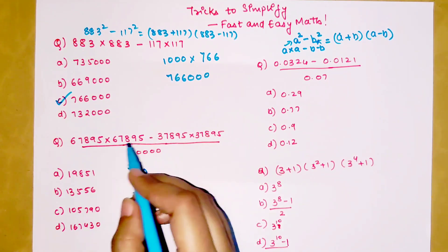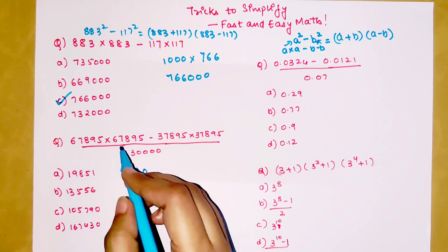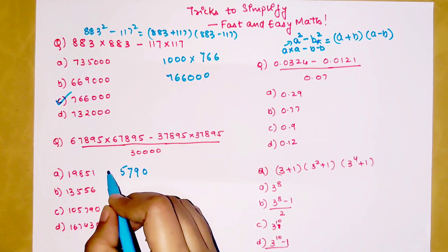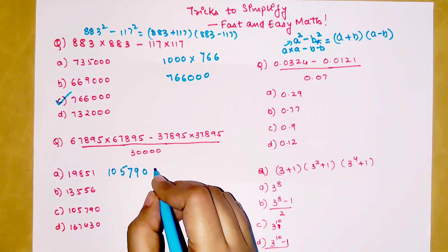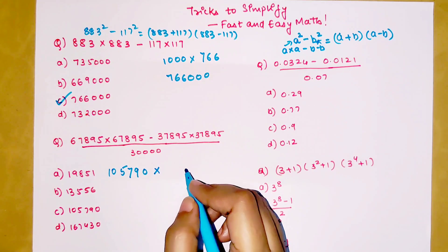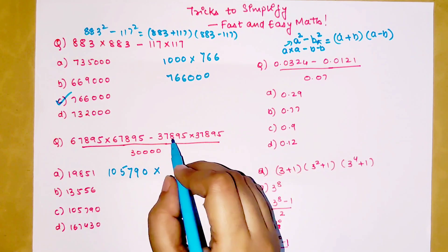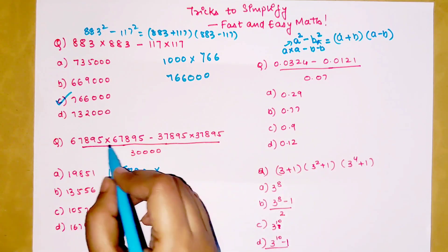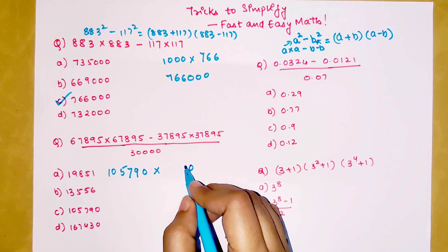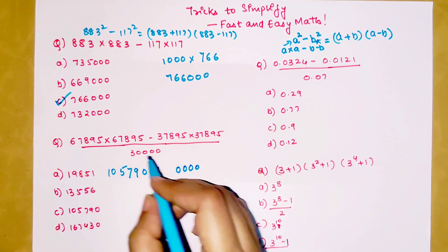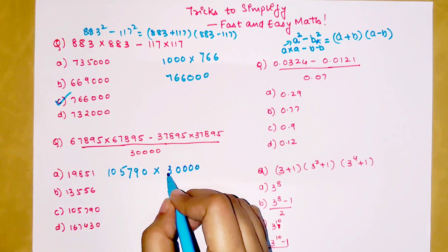9 and 1 carry is 8, and 8 is 16 with 1 carry. 14 plus 1 is 5 with 1 carry, so then you get 10. That is getting multiplied by 67895 - 37895, which gives you 30,000.